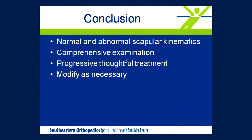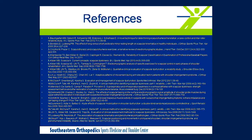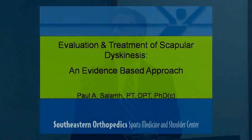In conclusion, we reviewed normal and abnormal scapular kinematics, classification systems — favoring the SDT for its reliability and validity — and a comprehensive progressive treatment program. Key principles include not moving too far too fast before periscapular muscles are sufficiently strengthened for dynamic open-chain exercises, and not ignoring compensatory mechanisms or pain provoked during weighted flexion or abduction. A thoughtful, progressive approach tailored to the patient's stage is essential for effective treatment of scapular dyskinesis.